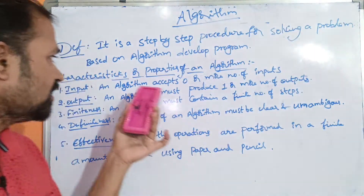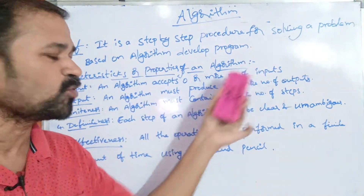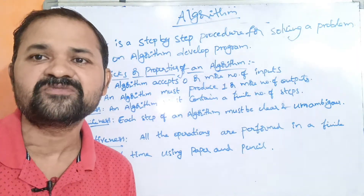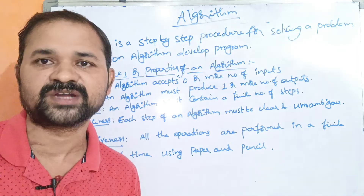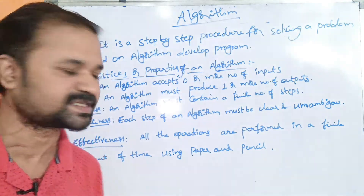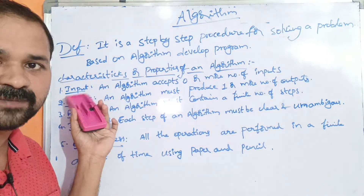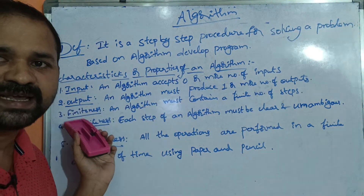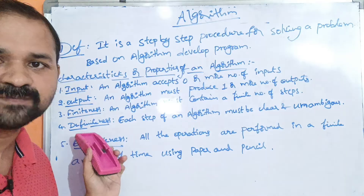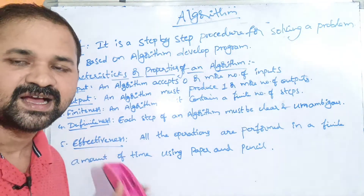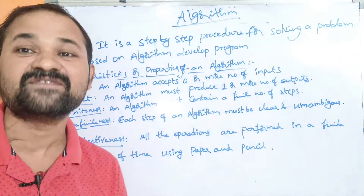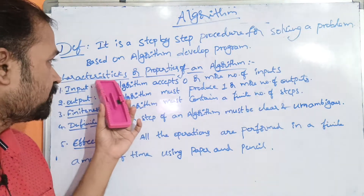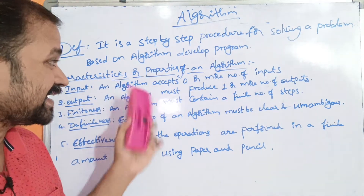Now let's see the characteristics or properties of an algorithm. Every algorithm has 5 properties. The first property is input, the second is output, the third is finiteness, the fourth is definiteness, and the last one is effectiveness. Every algorithm must contain these 5 properties or characteristics.